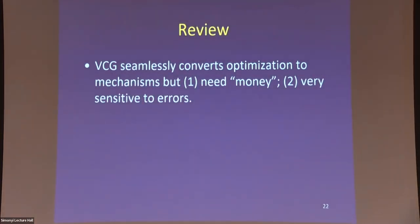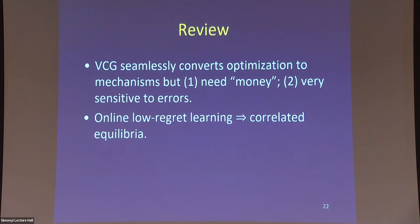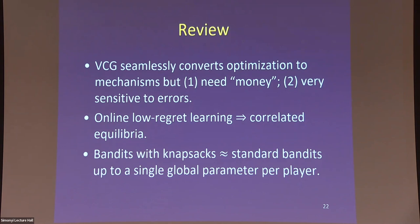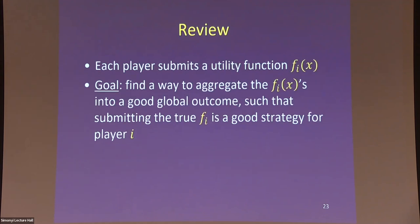Let's review the ingredients: VCG seamlessly converts optimization to mechanisms but requires money and is sensitive to imperfections in optimization — not very robust. We have the generic sense that low-regret online learning is the way to get equilibria. Bandits with knapsacks are potentially useful and, up to a single global parameter per player, actually easy.